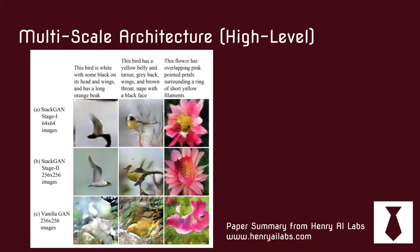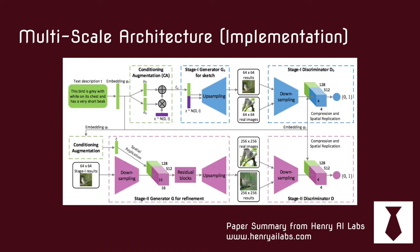This picture shows the comparison of the multi-scale approach versus just trying to go right to 256x256 from a random vector. This is a more low-level implementation picture — this is their architecture diagram that they put in the paper.